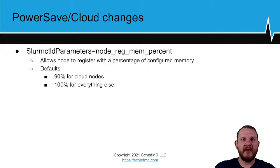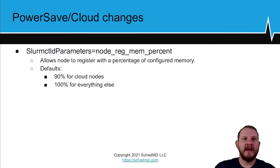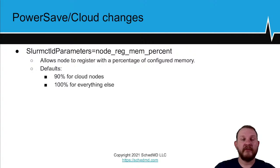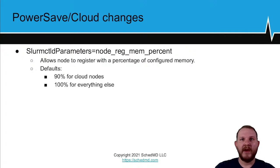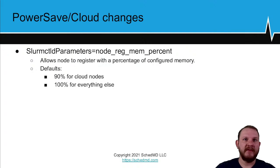An important note: Slurm will still schedule based on the configured memory, not the reported memory. So in the 100 GB example, Slurm schedules as if there's 100 GB on that node, not 90. Be aware of that when allowing nodes to register with less memory than configured.